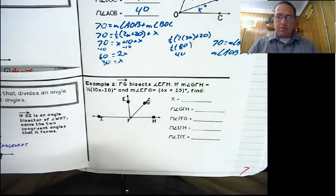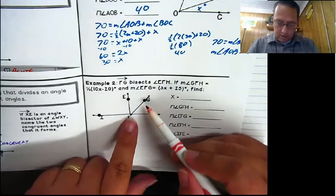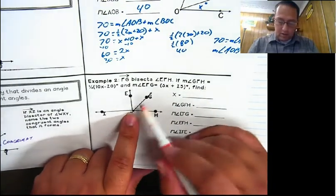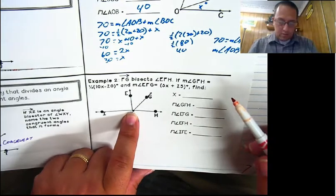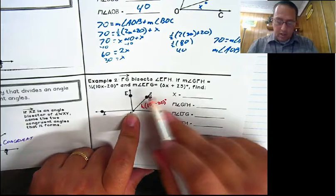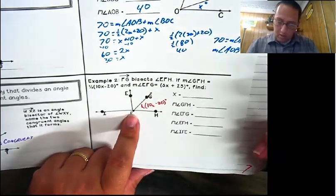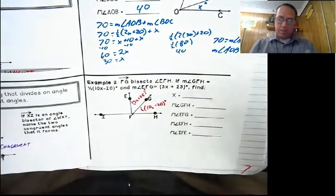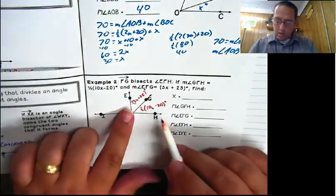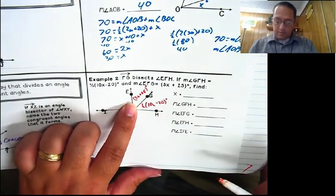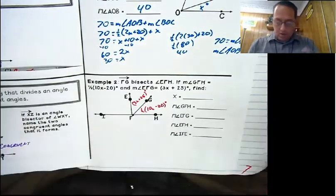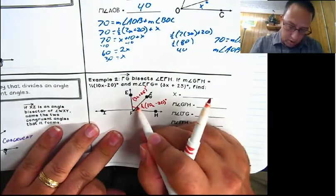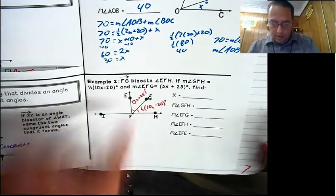Ray FG bisects angle EFH. If the measure of angle GFH is ½(10x − 20) degrees and the measure of angle EFG is (3x + 25) degrees, we need to find all these angle measures. Since FG is the bisector, these two angles are congruent - which means they must equal each other.